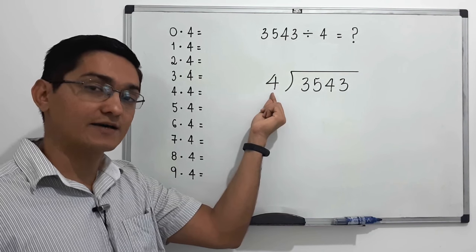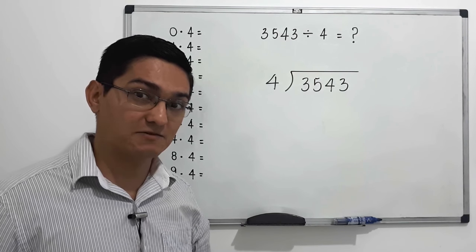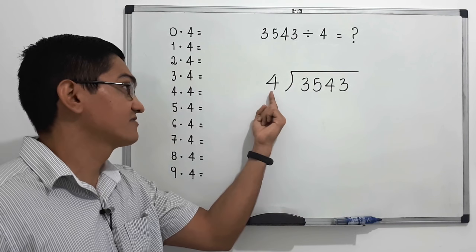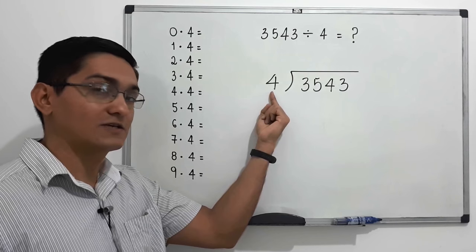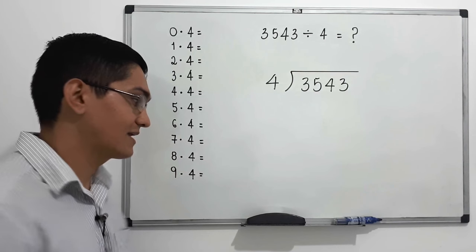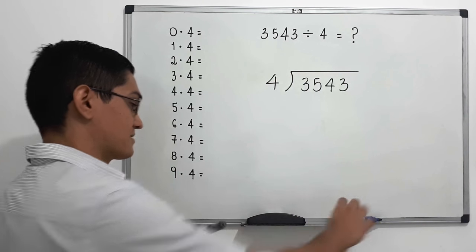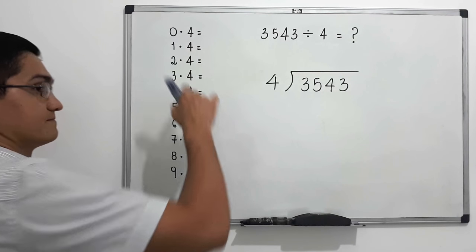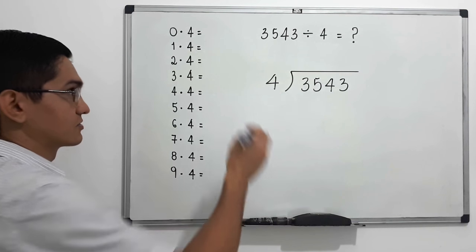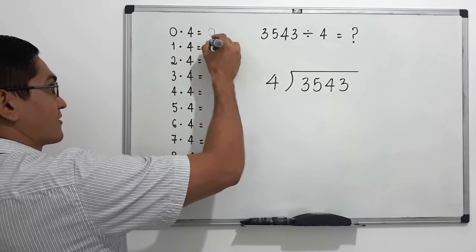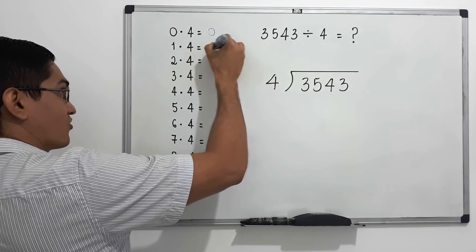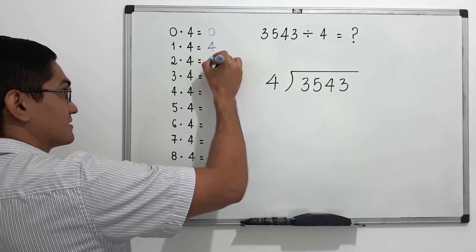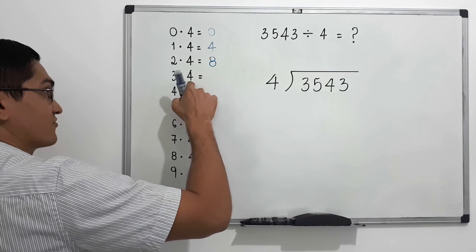It's important that we know the multiplication table of our divisor, which is four. So let's remind ourselves of the multiplication table of four: zero times four equals zero, one times four equals four, two times four equals eight, three times four equals twelve.